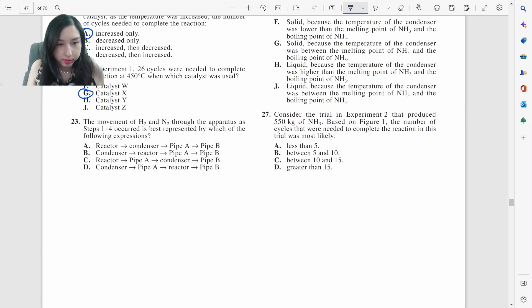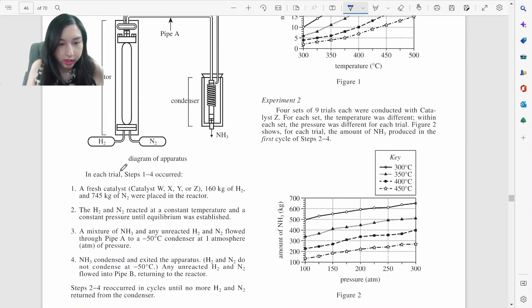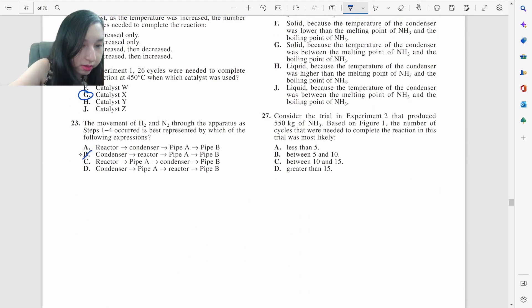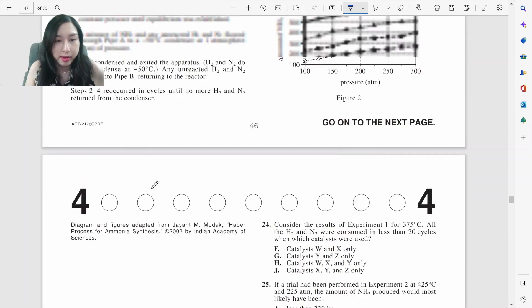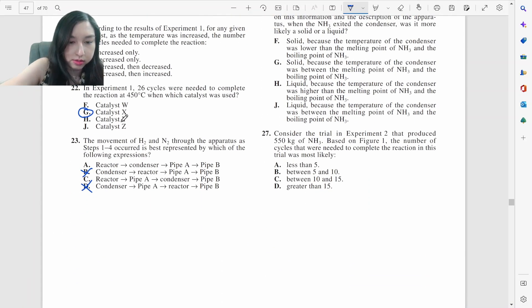The movement of hydrogen ammonia, so we're going to go either reactor or condenser first. Each trial steps one to four occurred, fresh catalysts were placed in the reactor. In the reactor, so it's either A or C. And then either the condenser or the pipe. Flow through pipe A to the condenser. So pipe A to the condenser, it's going to be our C.